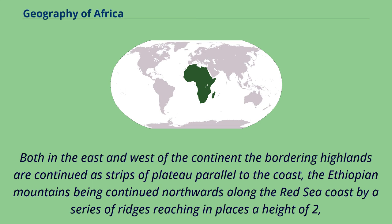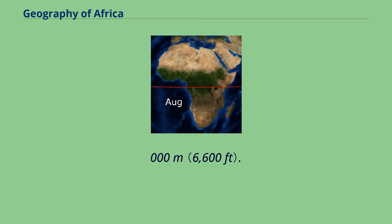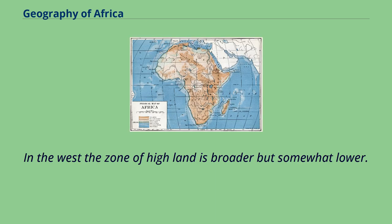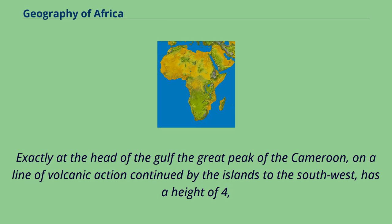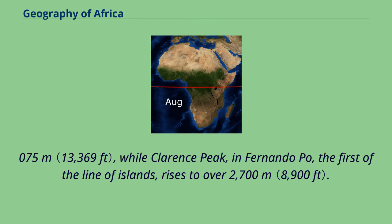Both in the east and west of the continent the bordering highlands are continued as strips of plateau parallel to the coast, the Ethiopian mountains being continued northwards along the Red Sea coast by a series of ridges reaching in places a height of 2,000 meters. In the west the zone of highland is broader but somewhat lower. The most mountainous districts lie inland from the head of the Gulf of Guinea, where heights of 1,800 to 2,400 meters are reached. Exactly at the head of the gulf the great peak of the Cameroon, on a line of volcanic action, has a height of 4,075 meters, while Clarence Peak, in Fernando Po, the first of the line of islands, rises to over 2,700 meters.